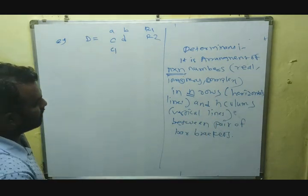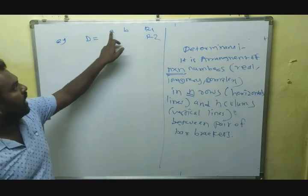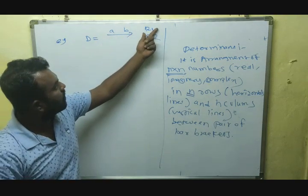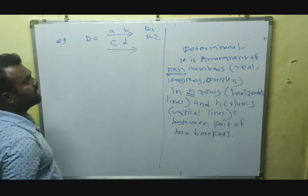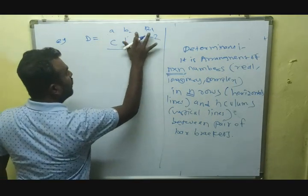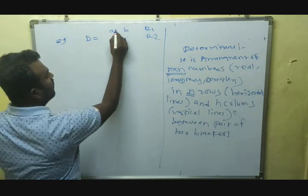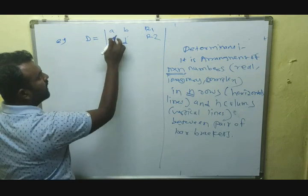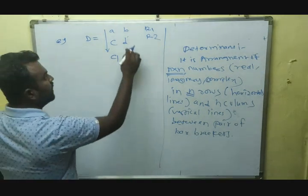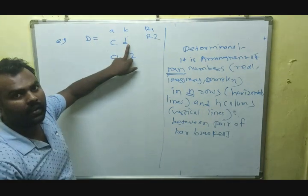Let me show you an example of a 2 by 2 determinant. We denote it as D. The elements A and B are present in the first row — a horizontal line. The elements C and D are present in the second row. Column 1 consists of elements A and C, which form the first vertical line. Column 2 consists of elements B and D, the second vertical line.